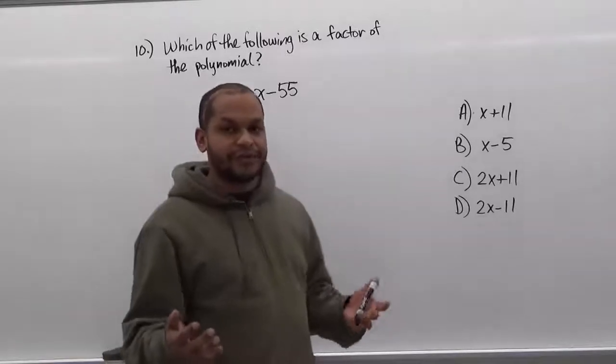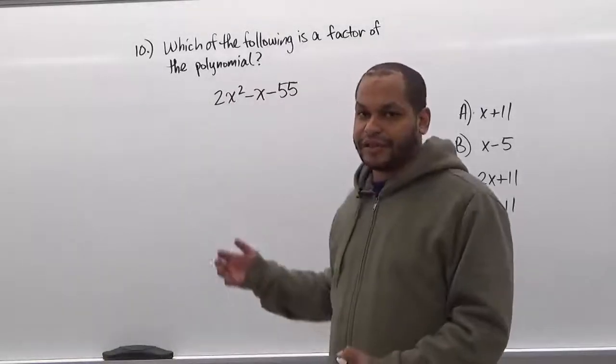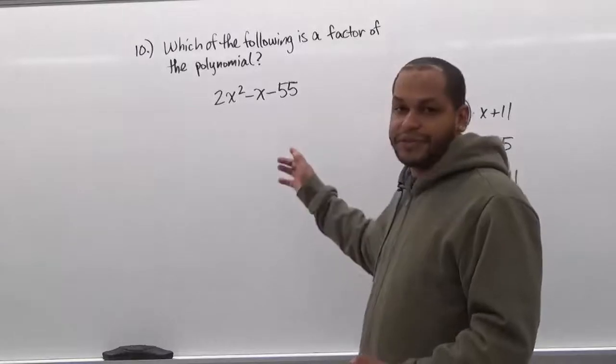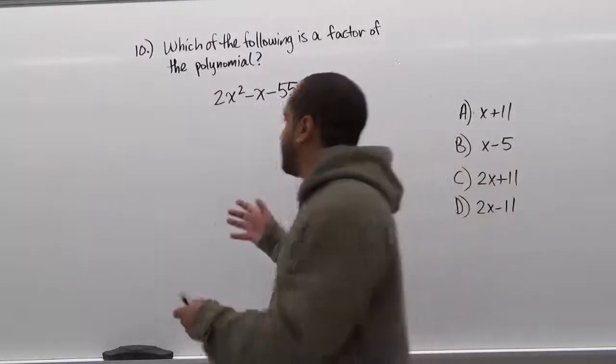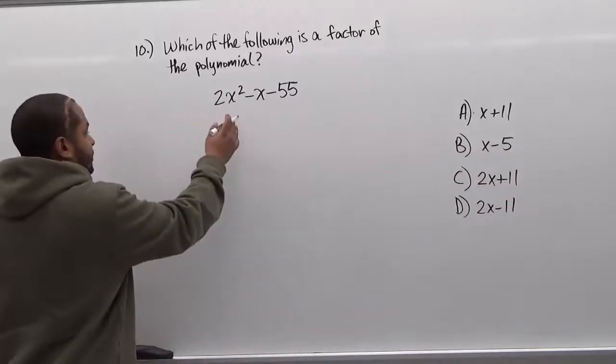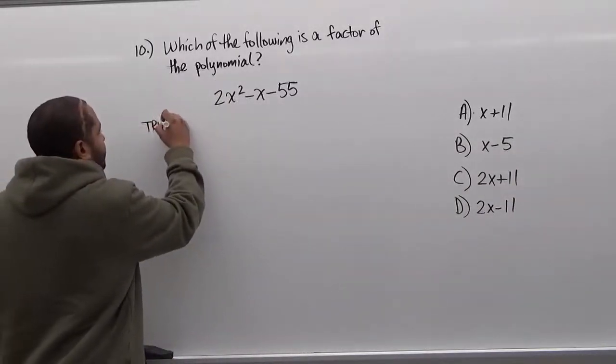There are two methods we can use to solve this. There's a trial and error method or we could use the grouping method after using the AC method. We're going to start with the trial and error method first because it's a little simpler and easier for us.